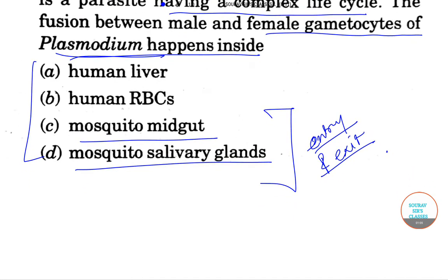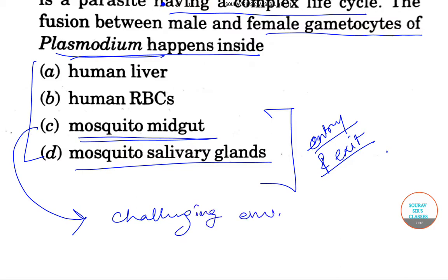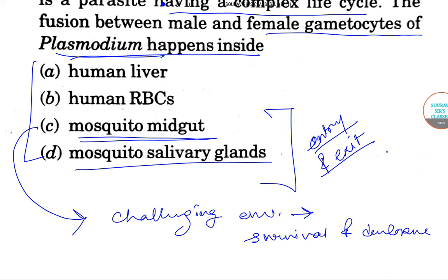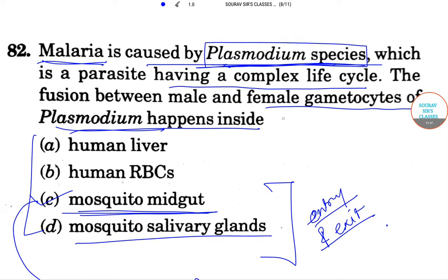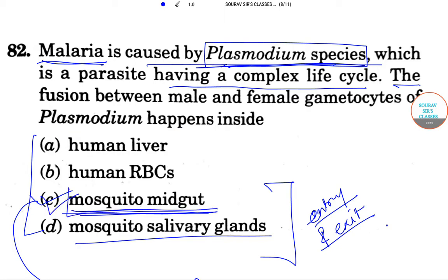The mosquito midgut presents a challenging environment for the survival and development of Plasmodium. So the answer here is the mosquito midgut — that is where the fusion between the gametocytes happens. Mosquito midgut is the correct answer.